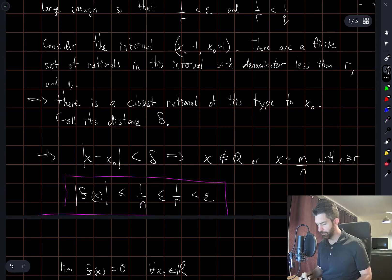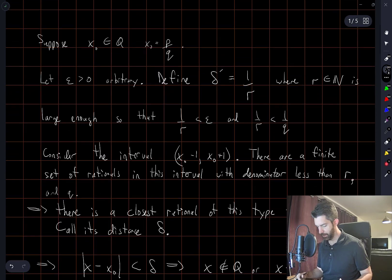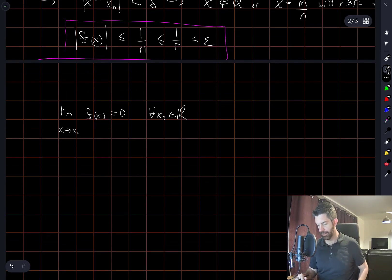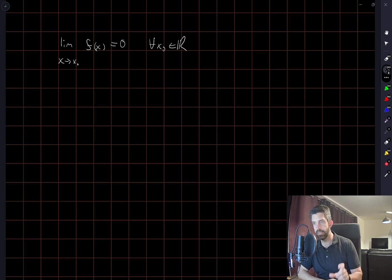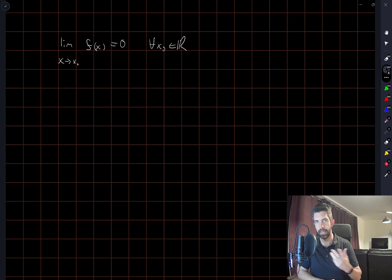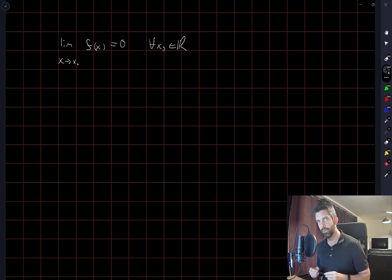A couple of little stumbles here, but in the end I'm fairly confident with everything going on. It's just a question of being comfortable recognizing things like: within any open interval there's an infinite number of rationals and irrationals, but the smaller that interval is, the larger the denominators of the rationals will get. If I have any more comments about this one, I'll write them down in the description. Otherwise, thanks for watching.